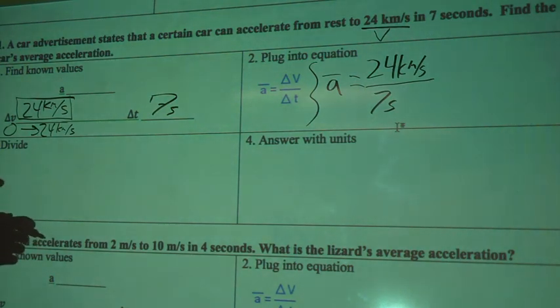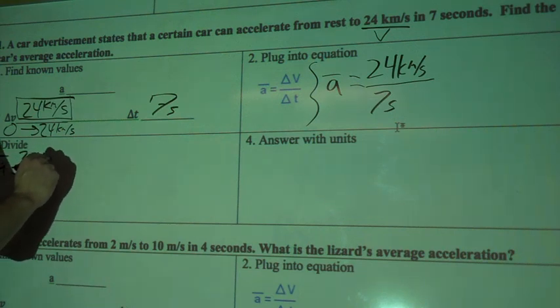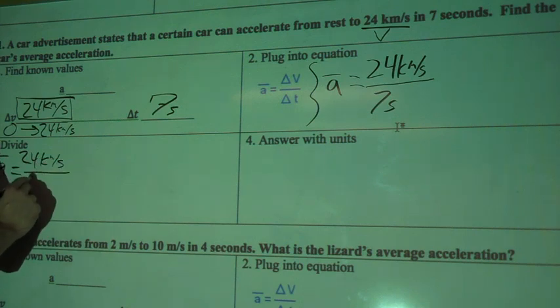And now we're going to go down to the divide part right here. So average acceleration, A equals, I'm going to rewrite everything from up there, 24 kilometers per second, divided by 7 seconds.